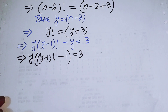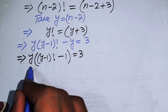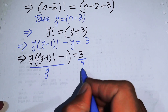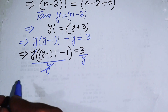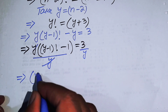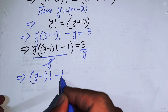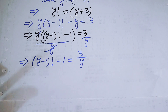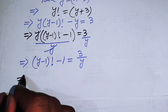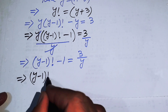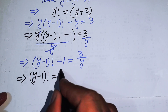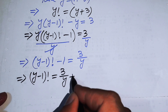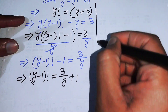In the next step, we divide both sides by y, so y cancels and on the left-hand side we get (y-1) factorial minus 1 equals 3 over y. Moving minus 1 to the right-hand side, we obtain (y-1) factorial equals 3/y plus 1.